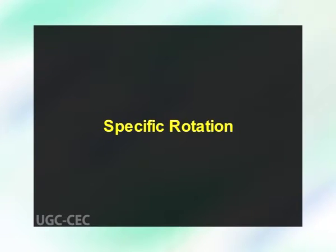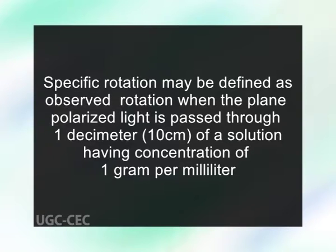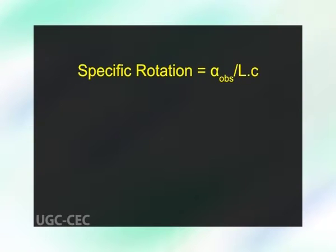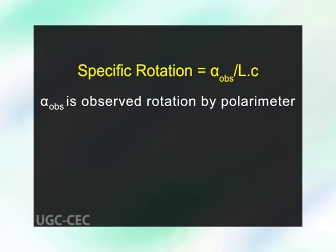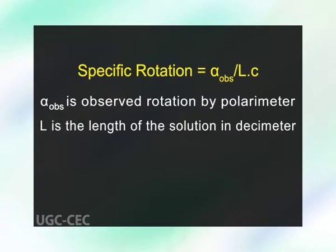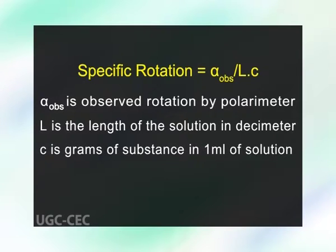Specific rotation. The measurement of optical activity is reported in terms of specific rotation, which is constant for the same compound under the same conditions. Specific rotation is defined as the observed rotation when the plane polarized light is passed through one decimeter of a solution having a concentration of one gram per milliliter. The sign plus or minus indicates the direction of rotation to right or left respectively. Specific rotation equals alpha observed divided by L times C, where alpha observed is the observed rotation, L is the length of solution in decimeters, and C is grams of substance in 1 ml of solution.